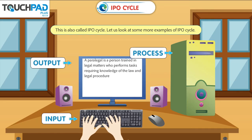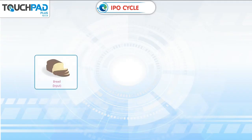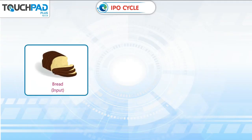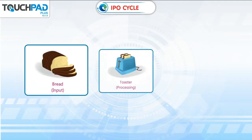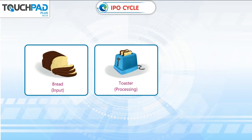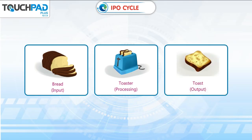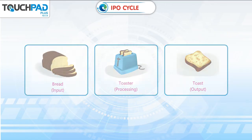Let us look at some more examples of the IPO Cycle. Bread is the input. You put it in the toaster — that is processing. And you get a toast, which is the output.